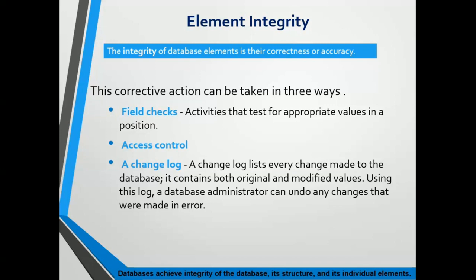The third means of providing database integrity is maintaining a change log for the database. A change log lists every change made to the database and contains both original and modified values. Using this log, a database administrator can undo any changes that were made in error. Databases achieve integrity of the database, its structure, and its individual elements.